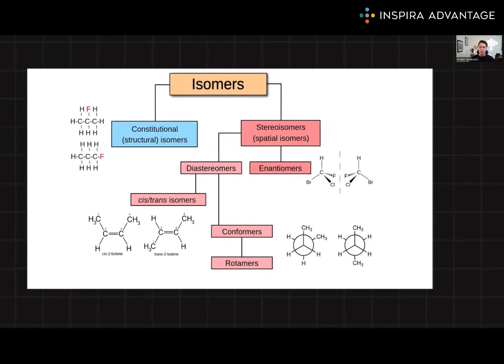Relative configuration refers to the spatial arrangement of atoms or groups of a molecule compared to another molecule. It allows us to classify stereoisomers as enantiomers, which are non-superimposable mirror images with opposite configurations at all stereocenters, or diastereomers, which are stereoisomers that are not mirror images and have different configurations at one but not all stereocenters. This classification helps us understand the relationships between stereoisomers and their distinct properties, such as reactivity, melting point, and boiling points.